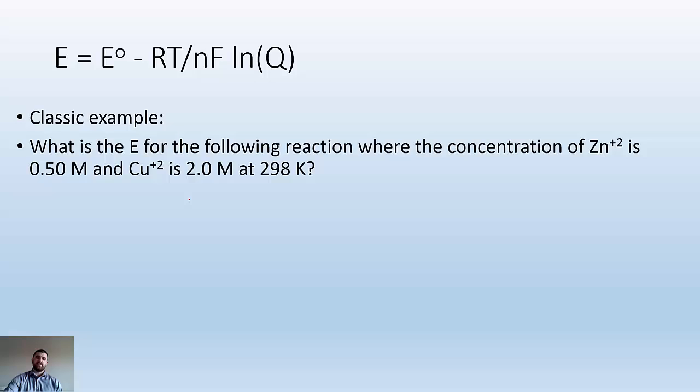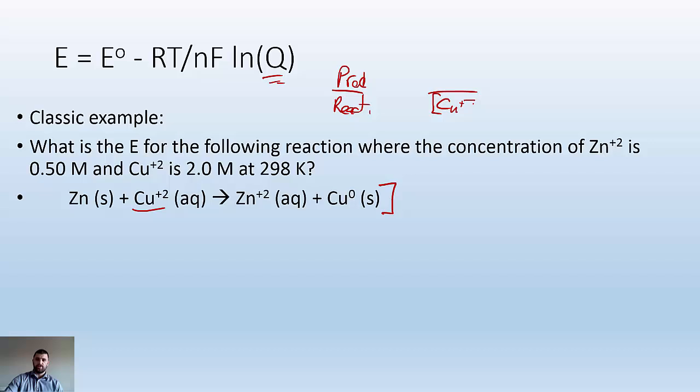Classic example. What is the E for the following reaction where the concentration of Zn+2 is 0.5 molar and Cu+2 is 2 molar at 298 Kelvin? First, we need to identify the reaction. If I'm talking about Q, I need to know what my products and reactants are. I'm starting with Cu+2, so that goes on the bottom. Zinc+2 is our product, so it goes on top. Solids drop out, so we don't include them in our Q expression.